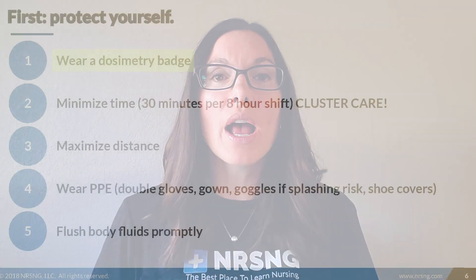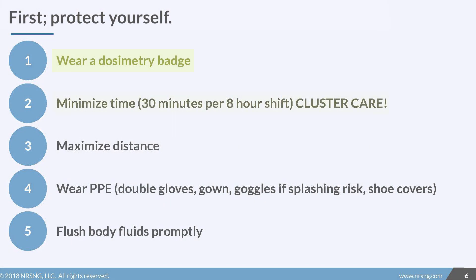Before we dig into those three things, it is most important for you to protect yourself. If you are caring for patients who have had radiation, you're going to want to do a couple things. Number one, you want to wear a dosimetry badge. Number two, you're going to want to minimize the time that you spend near that client — we're talking about 30 minutes in an eight-hour shift. That means you have to cluster care. You're also going to want to maximize your distance from the patient, and wear personal protective equipment.